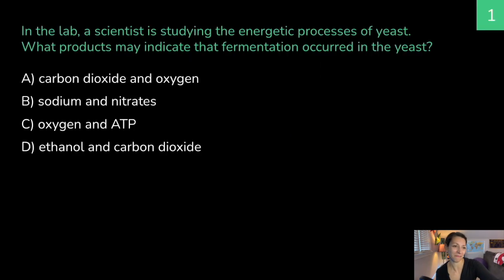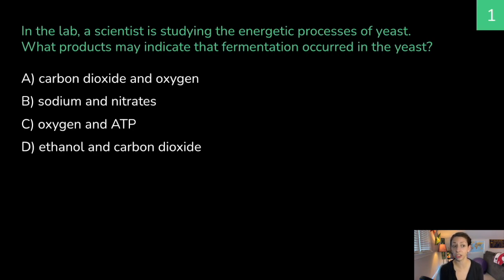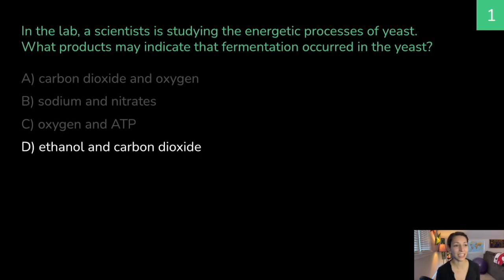Practice question one: In the lab, a scientist is studying the energetic processes of yeast. What products may indicate that fermentation occurred in the yeast? A) carbon dioxide and oxygen, B) sodium and nitrates, C) oxygen and ATP, or D) ethanol and carbon dioxide. The correct answer is D — ethanol and carbon dioxide. Ethanol, a type of alcohol, and CO2 are byproducts of alcoholic fermentation, so this would be evidence that the yeast is performing alcoholic fermentation.